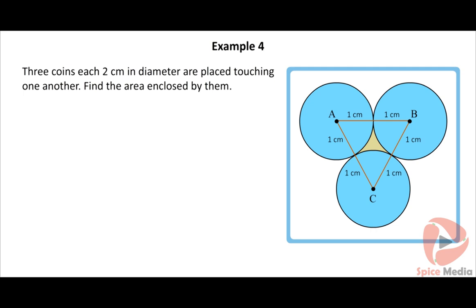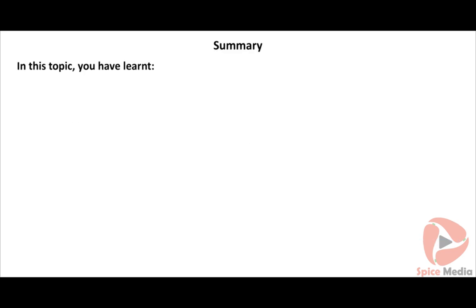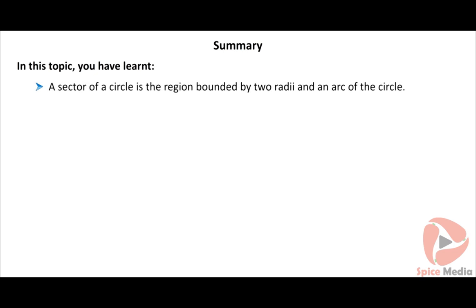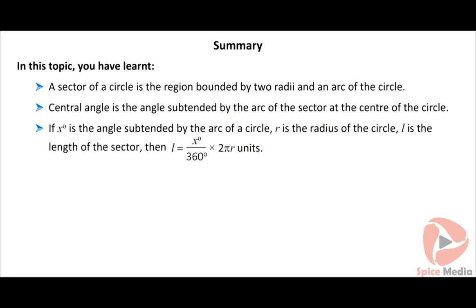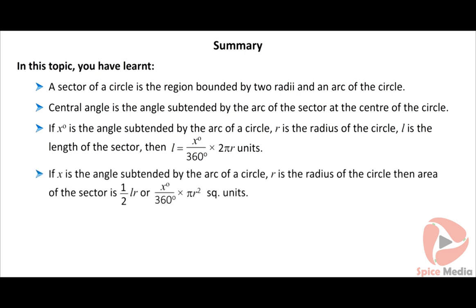In this topic you have learned: a sector of a circle is the region bounded by two radii and an arc of the circle. The central angle is the angle subtended by the arc of the sector at the center of the circle. If x degrees is the angle subtended by the arc, R is the radius, and L is the arc length, then L = (x/360) × 2πR units. The area of the sector equals (1/2) × L × R, or equivalently (x/360) × πR² square units.